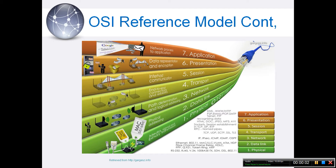Layer 4 is the transport layer. This layer provides transparent transfer of data between end systems or hosts, and is responsible for end-to-end error recovery and flow control. It ensures complete data transfer and provides process-to-process data transfer, and might provide reliable data transfer as well. It defines higher-level structure for data — datagrams, streams, and other names in various protocols — and defines port-style addressing to allow identification of individual processes communicating.